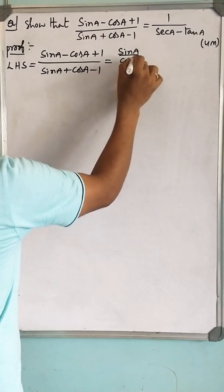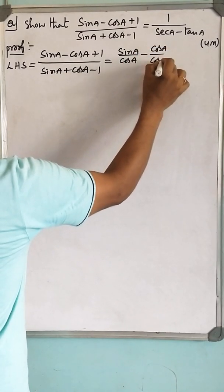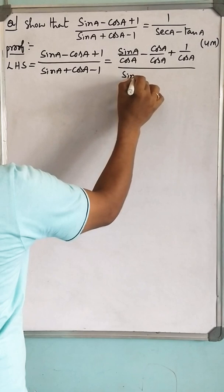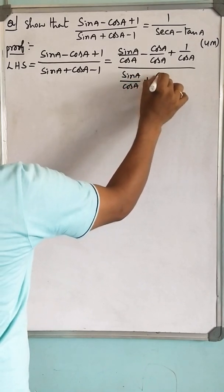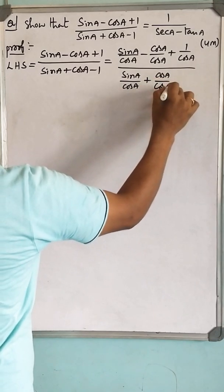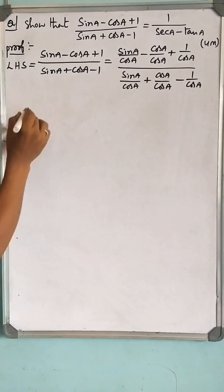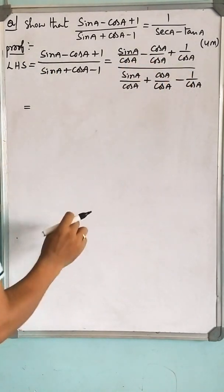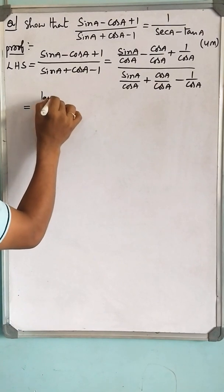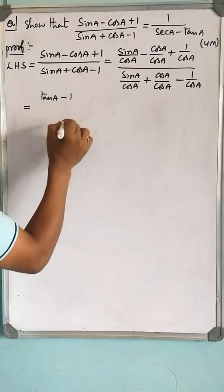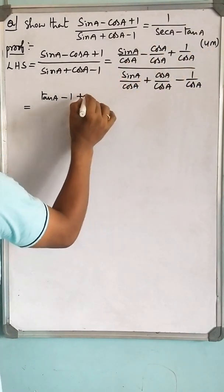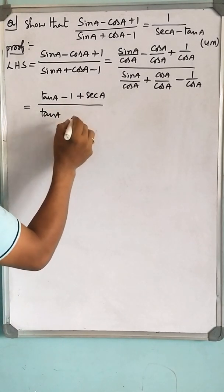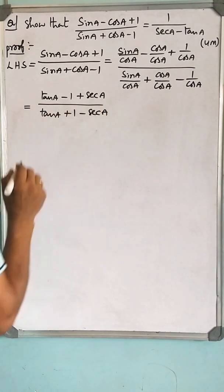Dividing each term by cos a: sin a / cos a - cos a / cos a + 1 / cos a, all divided by sin a / cos a + cos a / cos a - 1 / cos a. So sin a / cos a becomes tan a, cos a / cos a becomes 1, and 1 / cos a becomes sec a. This gives us (tan a - 1 + sec a) / (tan a + 1 - sec a).